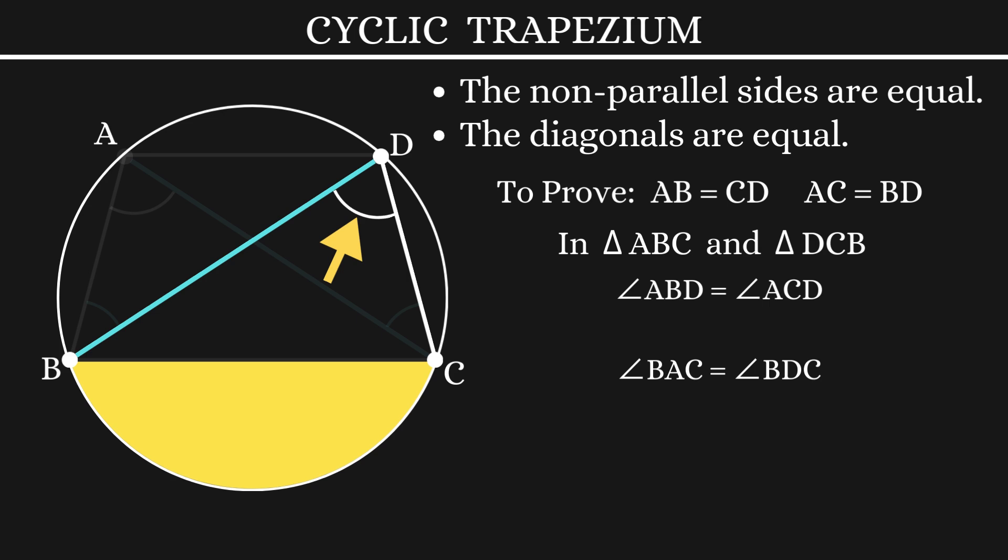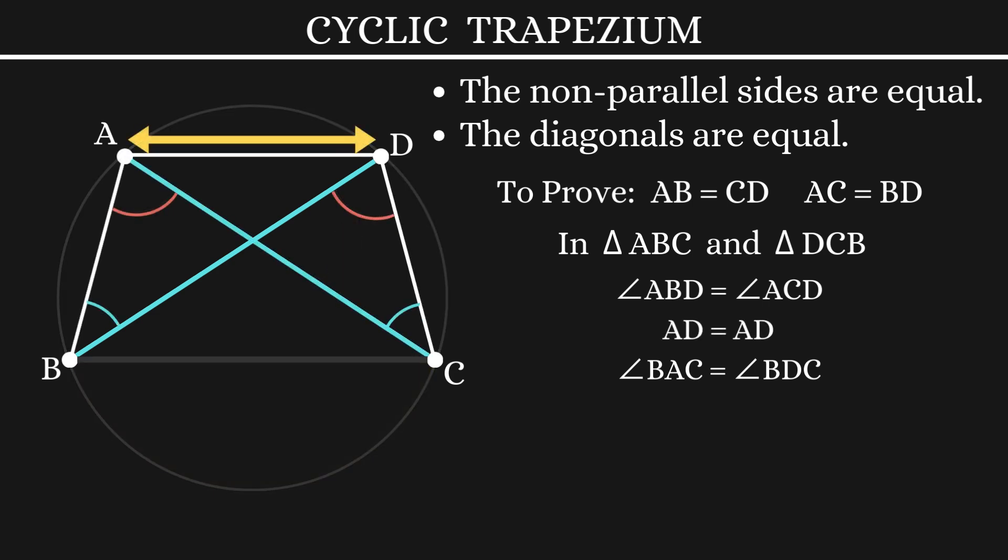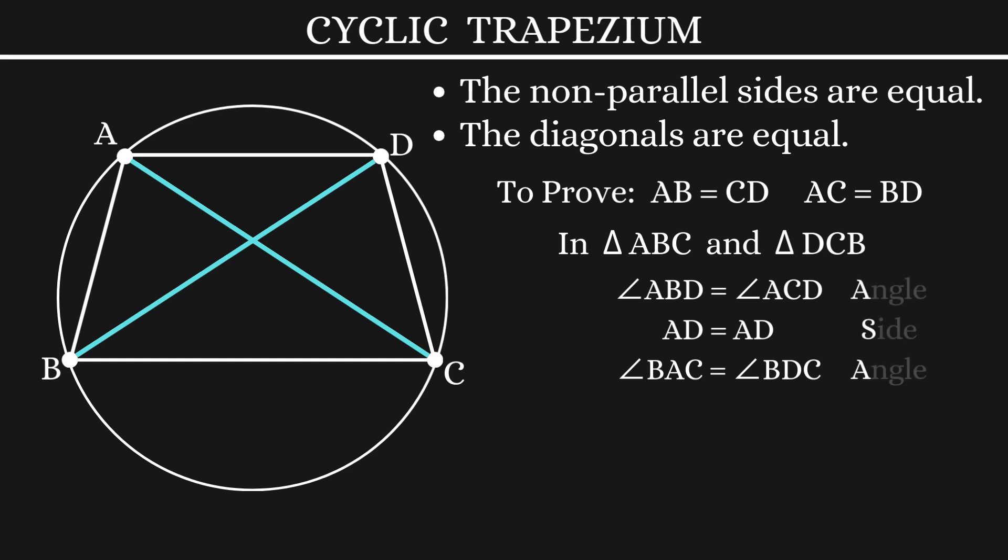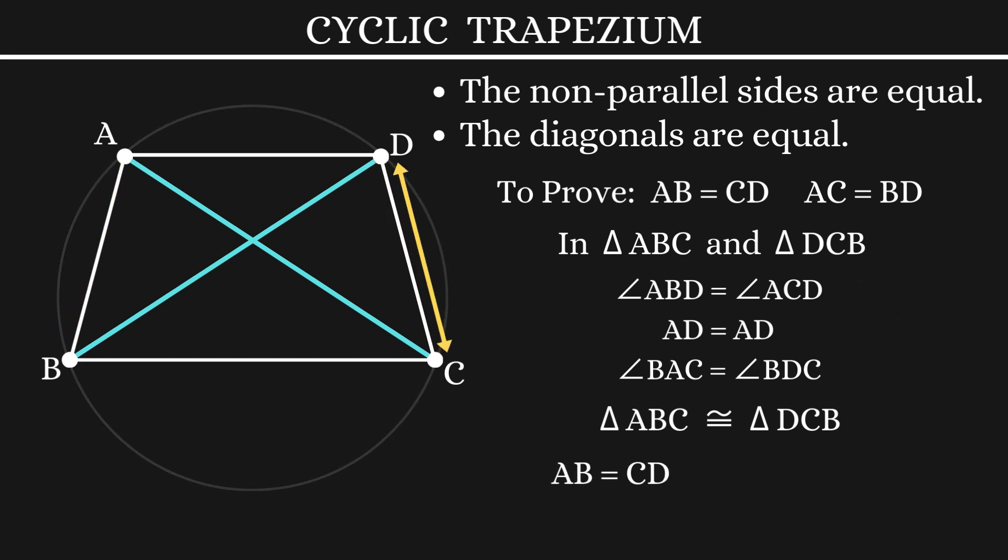Also, the side AD is common to both the triangles. So, according to ASA congruence property, these two triangles are congruent to each other. So, the corresponding sides AB is equal to CD and AC is also equal to BD.